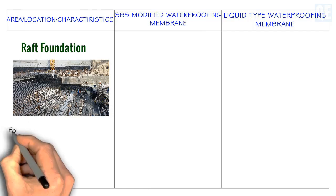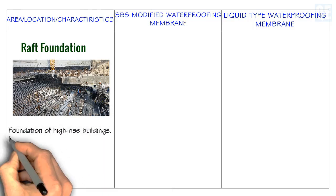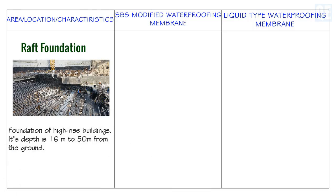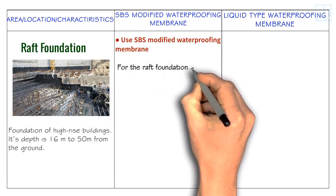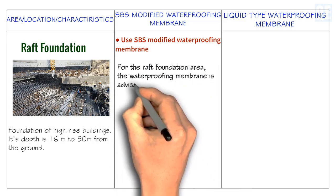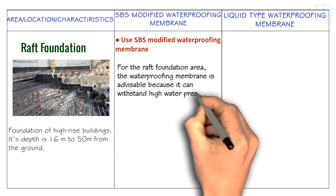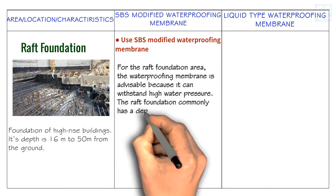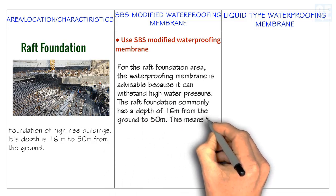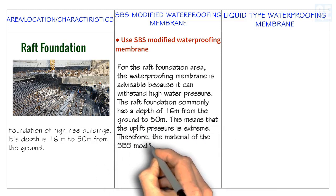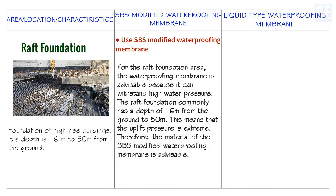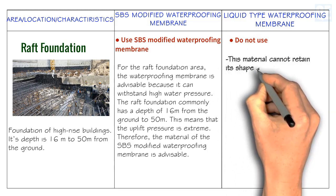For the raft foundation, mostly used for high-rise buildings with a depth of 16 meters to 50 meters from the ground, use SBS modified waterproofing membrane. It is advisable because it can withstand high water pressure — the uplift pressure at this depth is extreme. Do not use liquid waterproofing membrane, as this material cannot retain its shape after being pressed and stretched by the heavy load of the raft foundation.